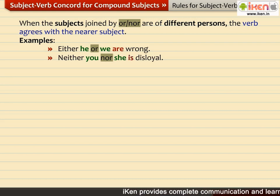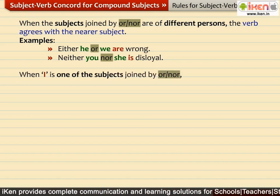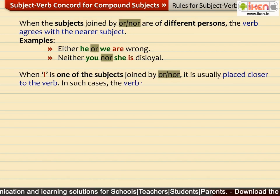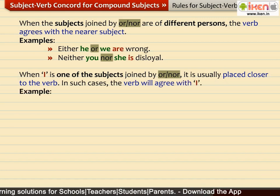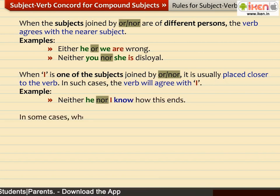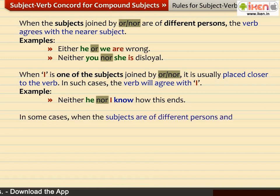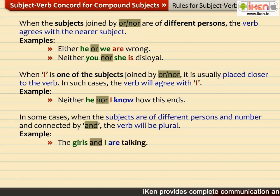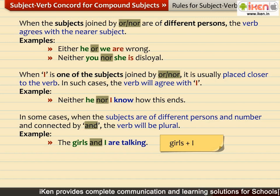When 'I' is one of the subjects joined by OR or NOR, it is usually placed closer to the verb. In such cases, the verb agrees with I. For example: 'Neither he nor I know how this ends.' In some cases, when the subjects are of different persons and number and connected by AND, the verb will be plural. For example: 'The girls and I are talking.' The plural verb ARE TALKING is taken because 'girls and I' can be spoken of as WE.